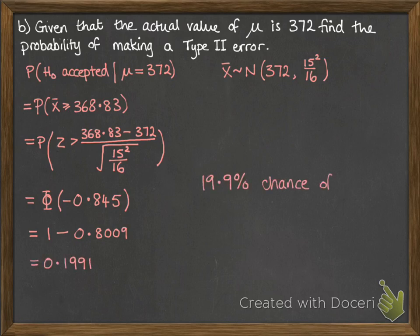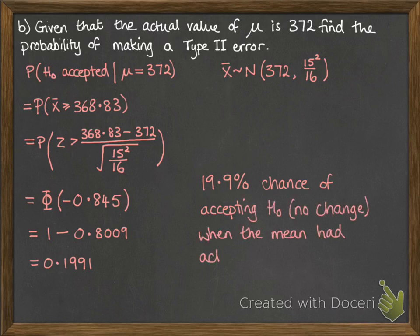So what we can conclude from this is that there's a 19.9% chance that we would accept the null hypothesis and state that there's been no change when the mean had actually dropped to 372 grams.